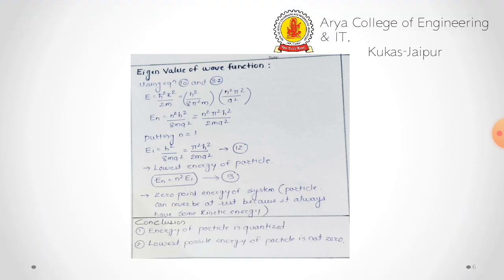For n = 1, E₁ = h²/8ma² = π²ħ²/2ma². This is the lowest energy of the particle. We can generalize as Eₙ = n²E₁. This is the zero-point energy of the system, and we can conclude that the particle can never be at rest because it always has some kinetic energy.